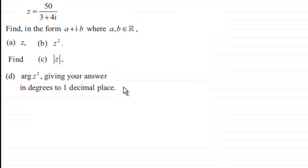Okay welcome back if you had a go. So first of all we've got z equals 50 all divided by 3 plus 4i and what we've got to do is find in the form a plus ib where a and b are real numbers the value of z.